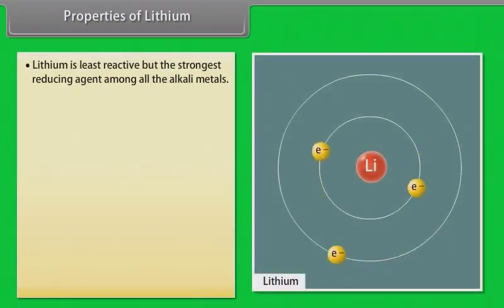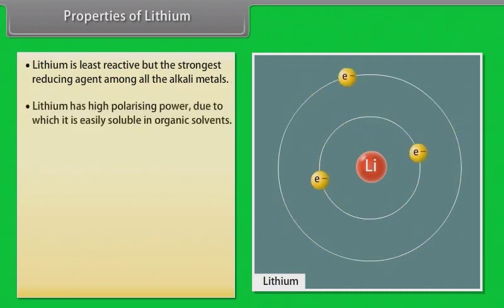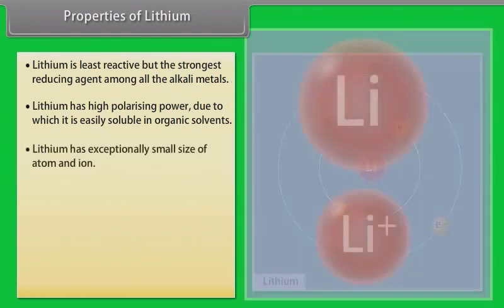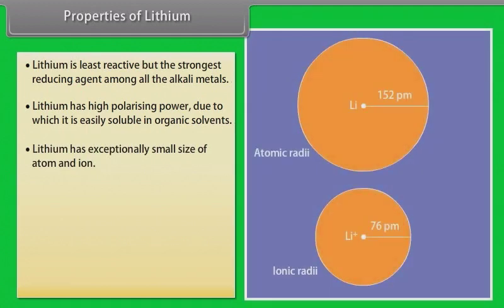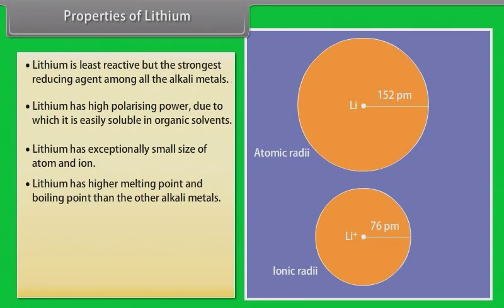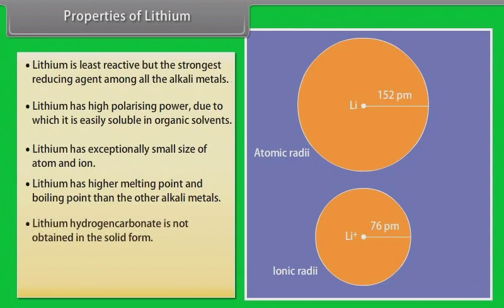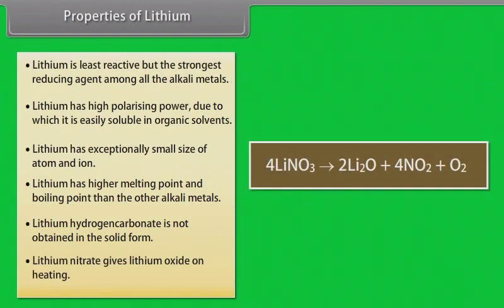Properties of Lithium. Lithium is least reactive but the strongest reducing agent among all the alkali metals. Lithium has high polarizing power due to which it is easily soluble in organic solvents. Lithium has exceptionally small size of atom and ion. Lithium has higher melting point and boiling point than the other alkali metals. Lithium hydrogen carbonate is not obtained in the solid form. Lithium nitrate gives lithium oxide on heating.